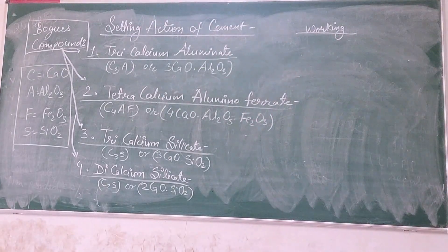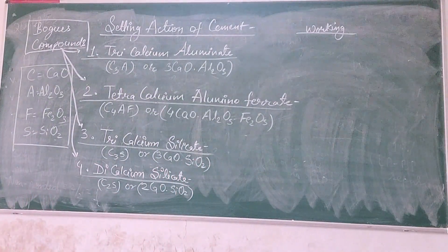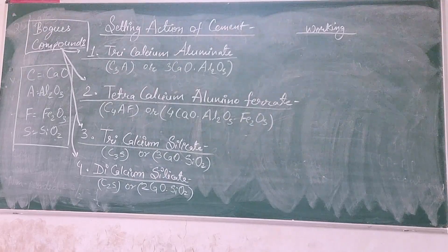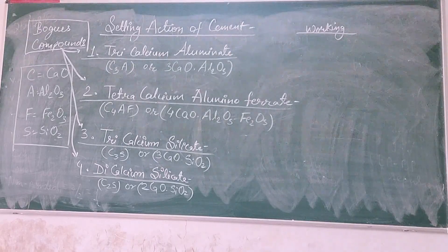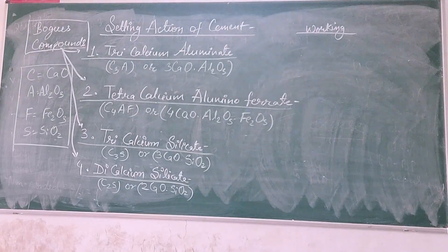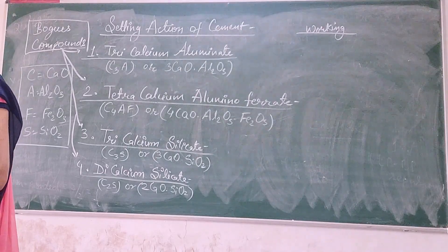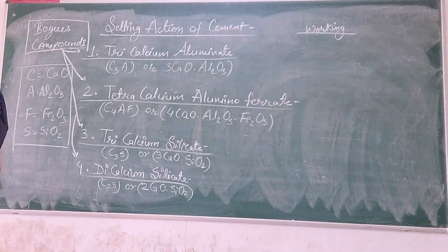The initial setting time is 30 to 45 minutes, depending on temperature. After 10 to 12 hours, your cement paste gets hardened and it is called final setting time — at that time you can walk on it and it doesn't leave an impression. That is your final setting time, when hardness is achieved, and after that you need to put water for curing.